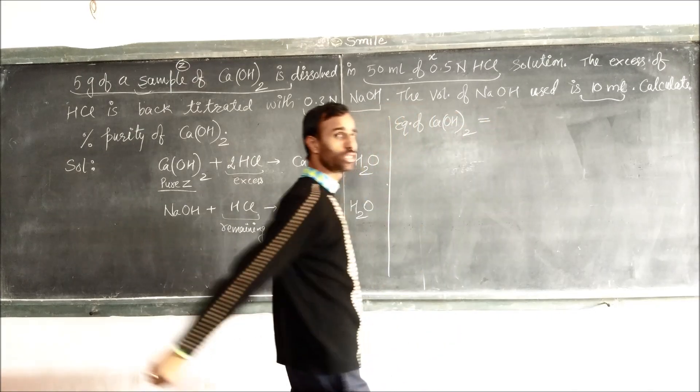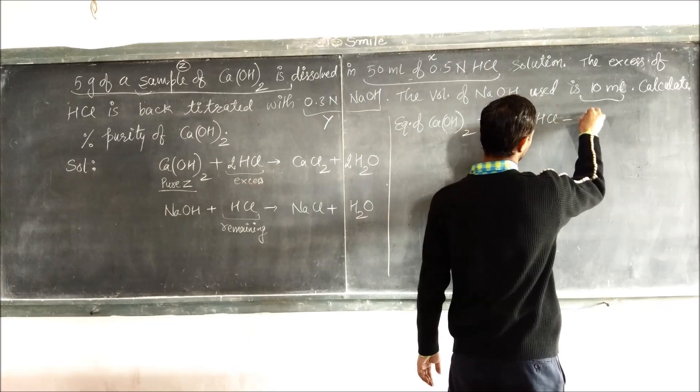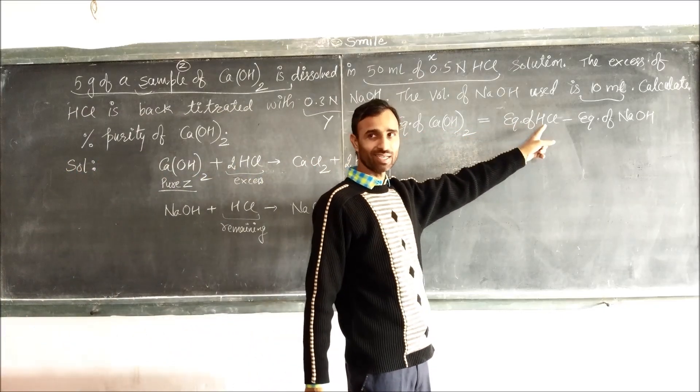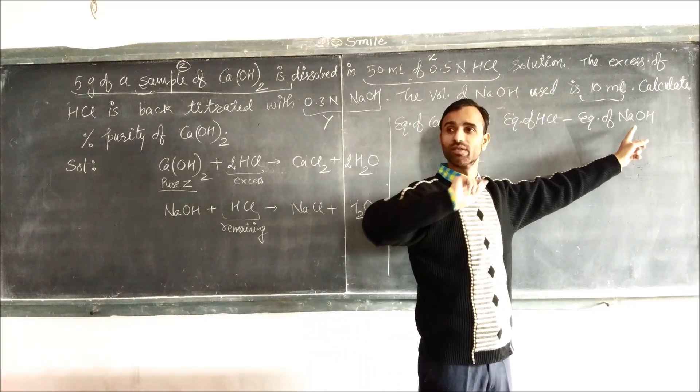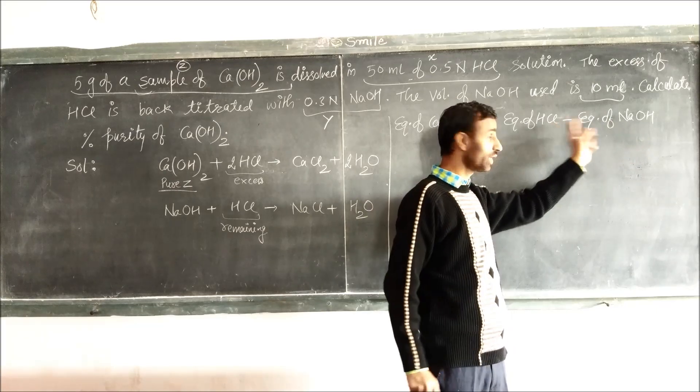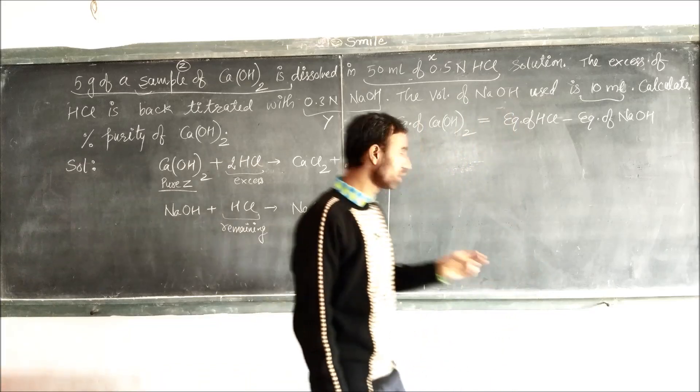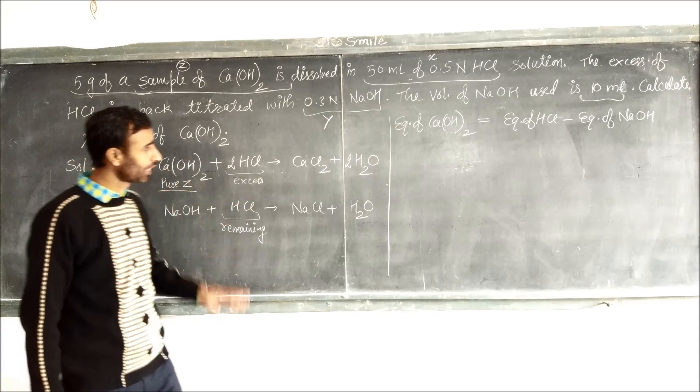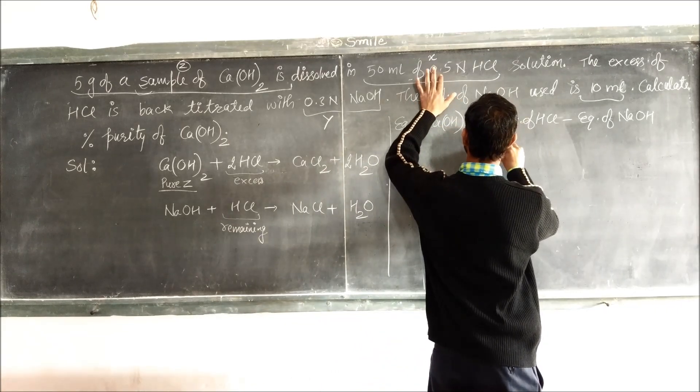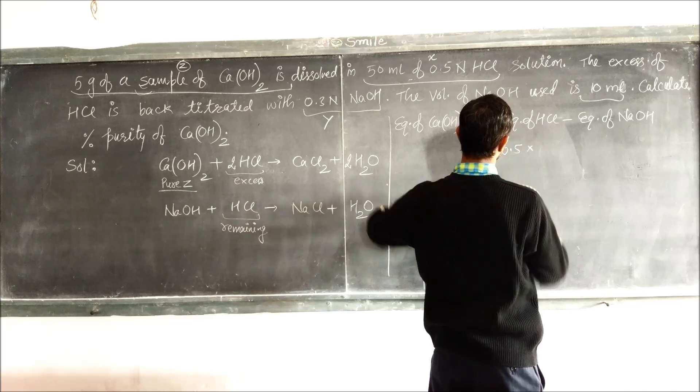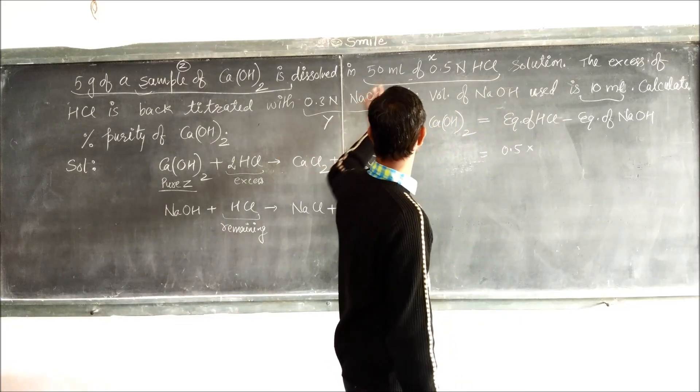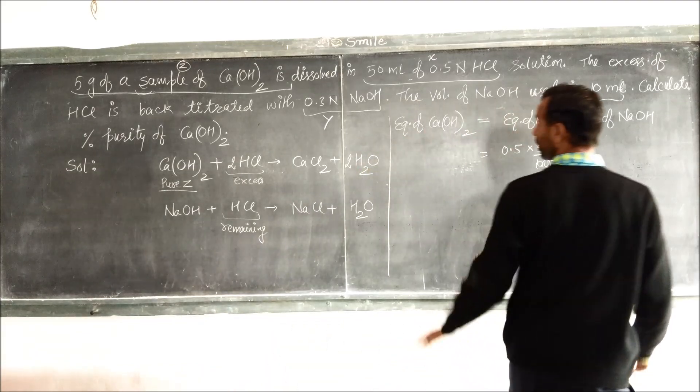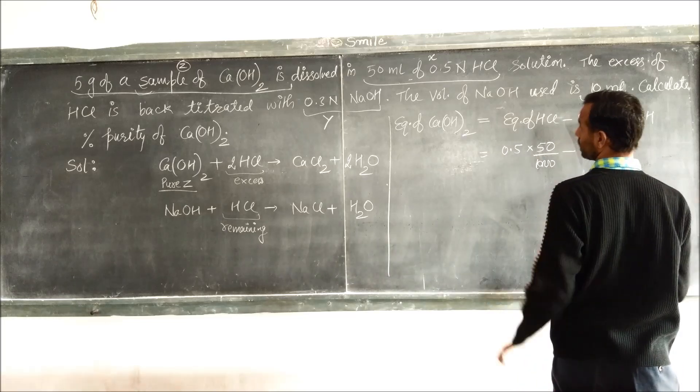Equivalence of calcium hydroxide is equal to total equivalence of HCl minus equivalence of NaOH, because this is equivalence of total HCl minus equivalence of HCl remaining, means difference is equivalence of HCl actually used. So equivalence of HCl used here is equal to equivalence of calcium hydroxide. So equivalence of HCl: normality 0.5 and volume 50 ml, minus equivalence of NaOH: normality 0.3 and volume 10 ml.